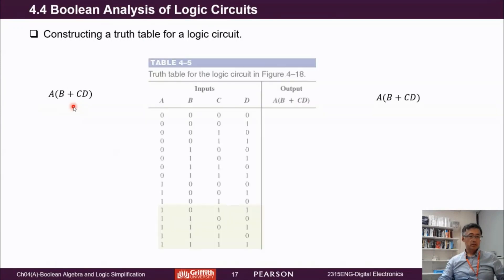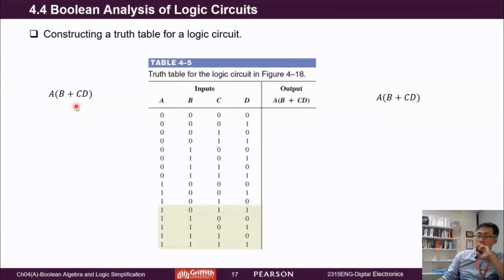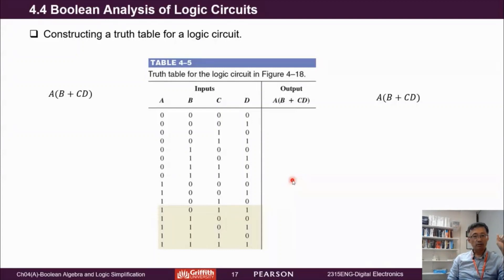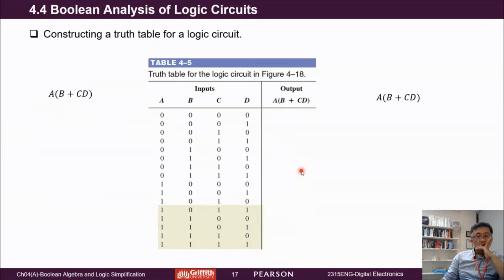We have the boolean expression — how can we generate or make a truth table? This is another step. As mentioned, the boolean expression, circuit diagram, and truth table are the same thing; we can convert among them. We already converted from circuit diagram to boolean expression, and now we want to convert from the boolean expression to construct the truth table.